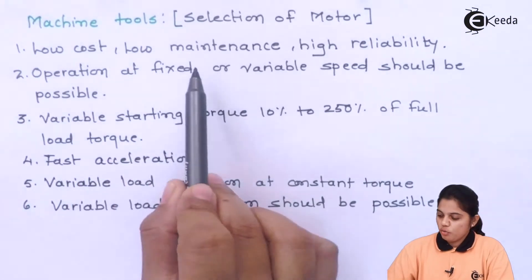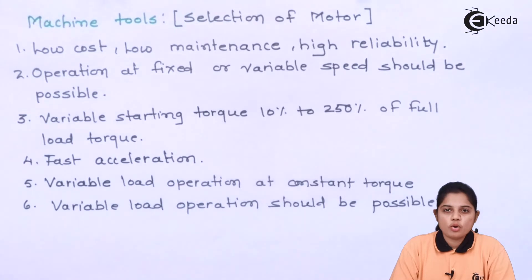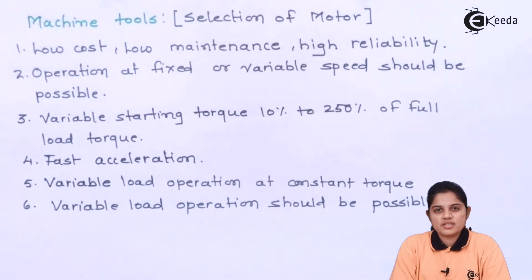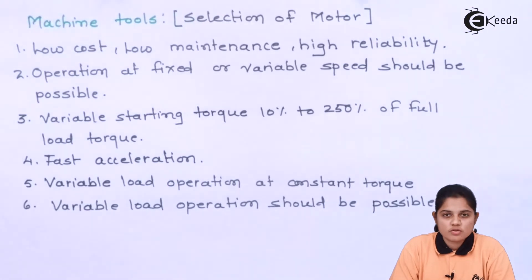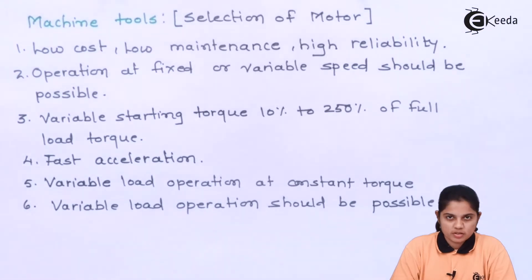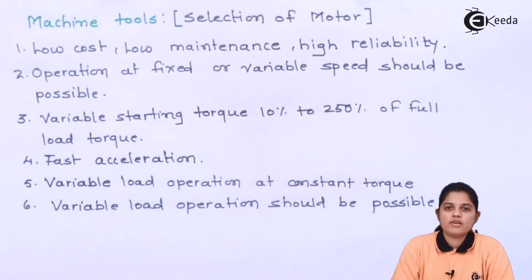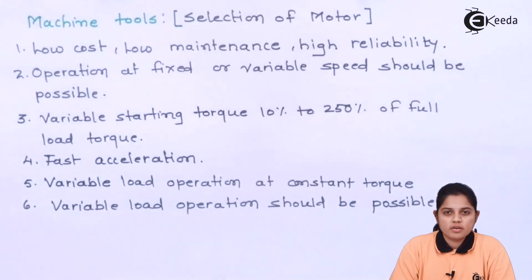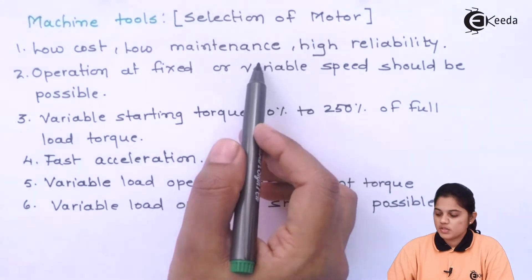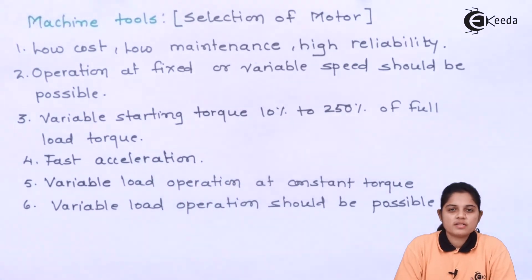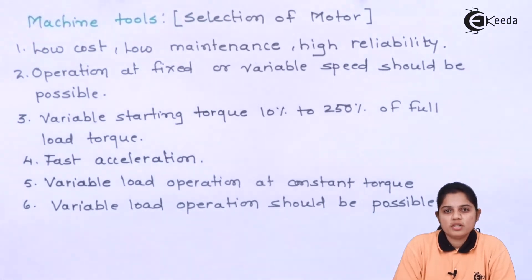Low cost, low maintenance, and high reliability. Low cost comes when your application requires a small size motor with small ratings. Maintenance — how many times you have to maintain and what type of maintenance is required — will decide the overall cost. Low maintenance means low cost. High reliability: if the application is portable and you are buying a motor for it, it should be reliable enough to move from one place to another.